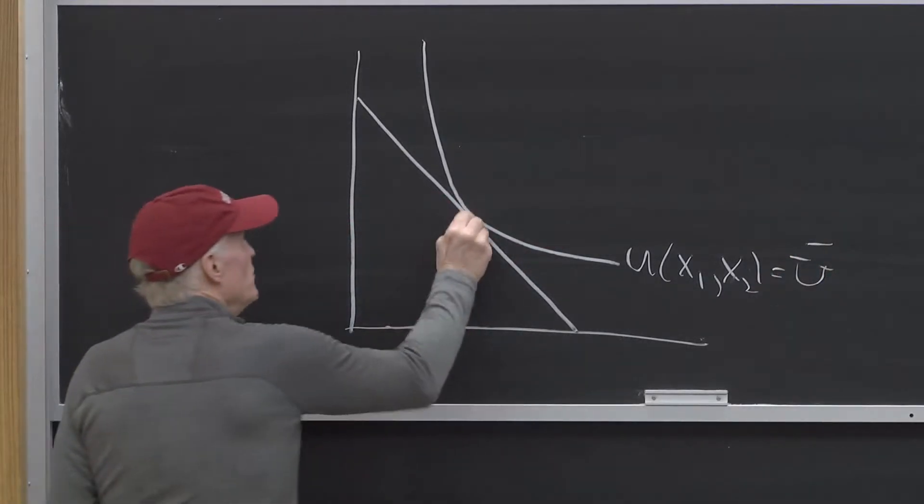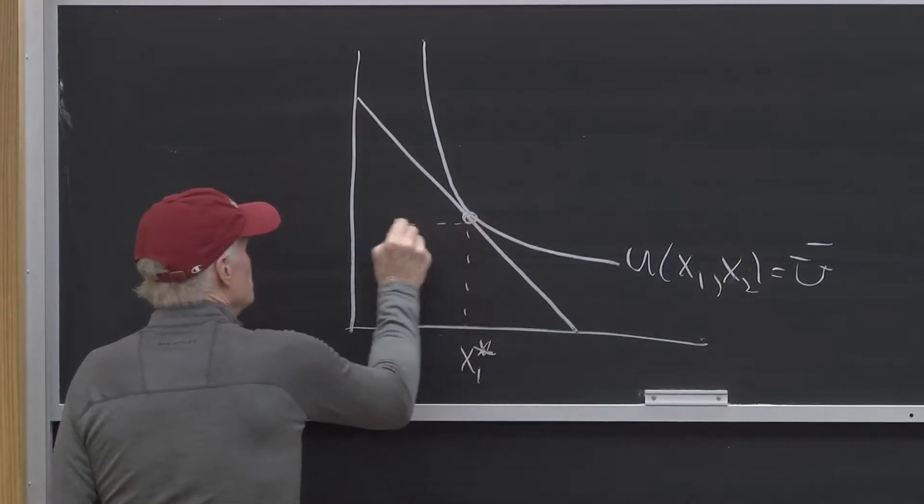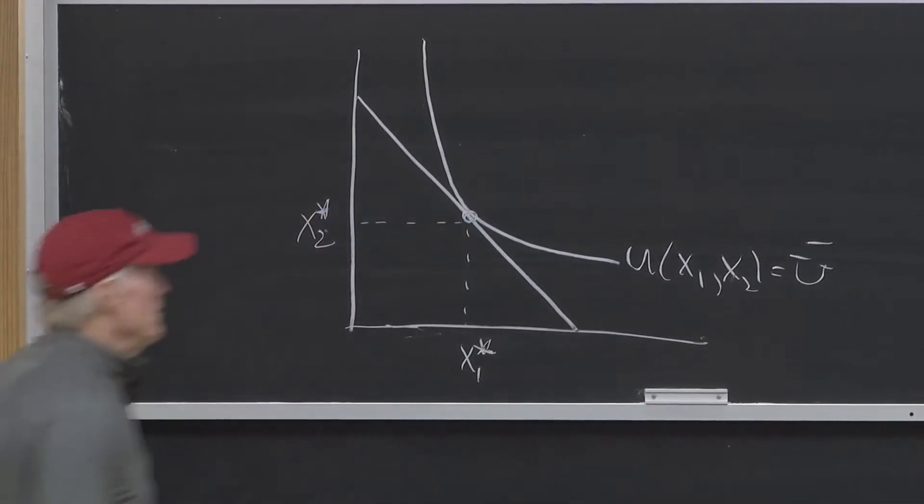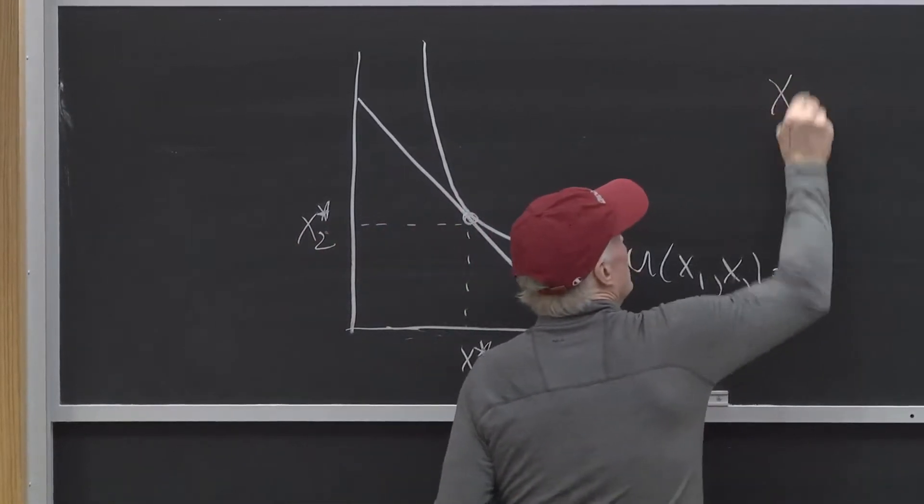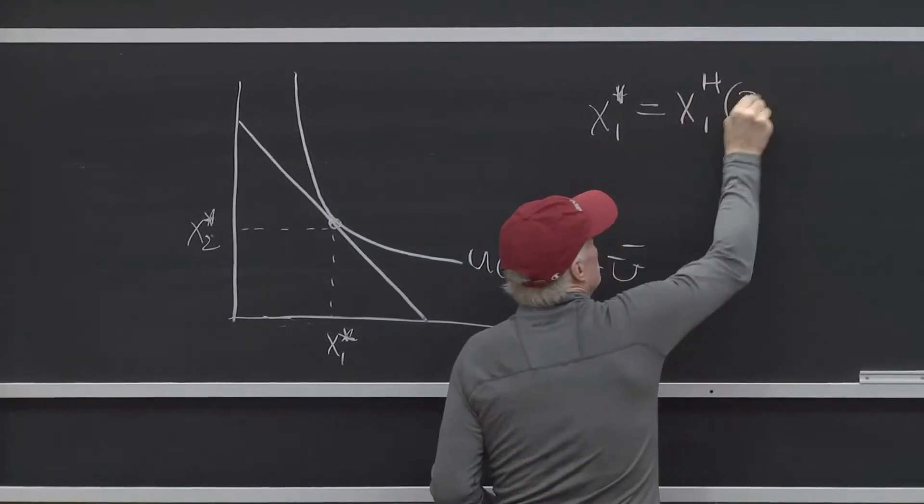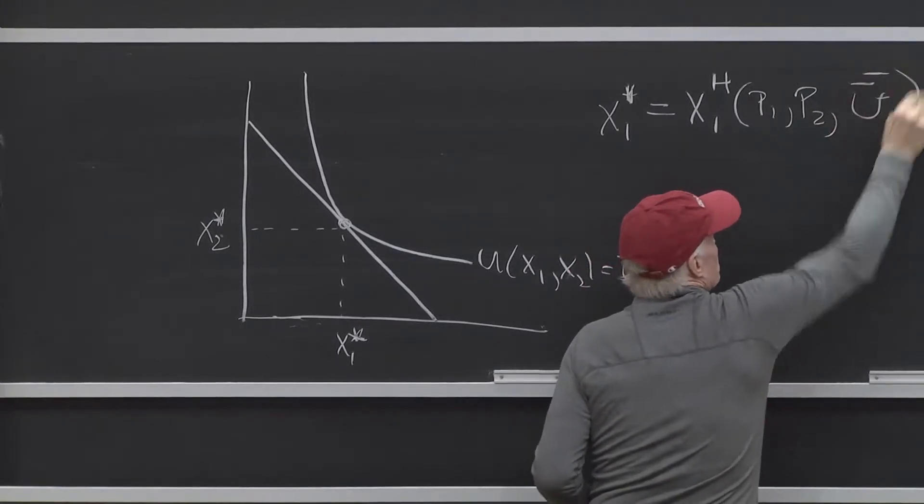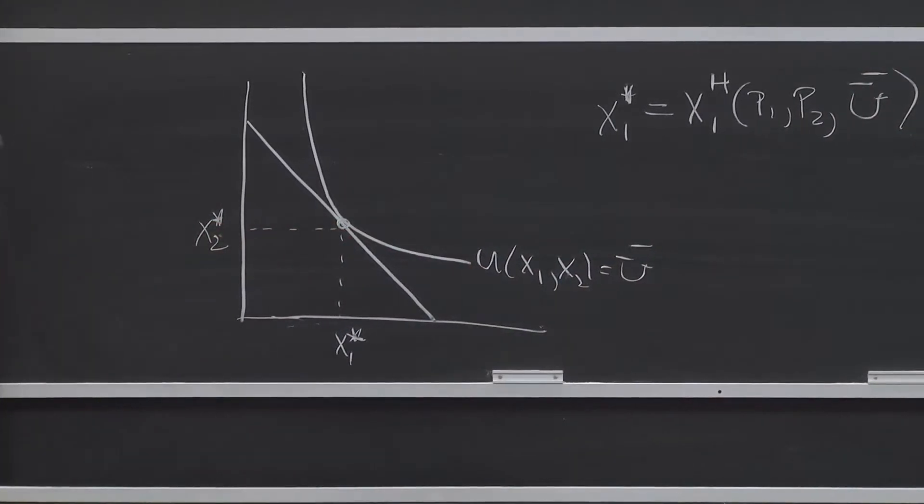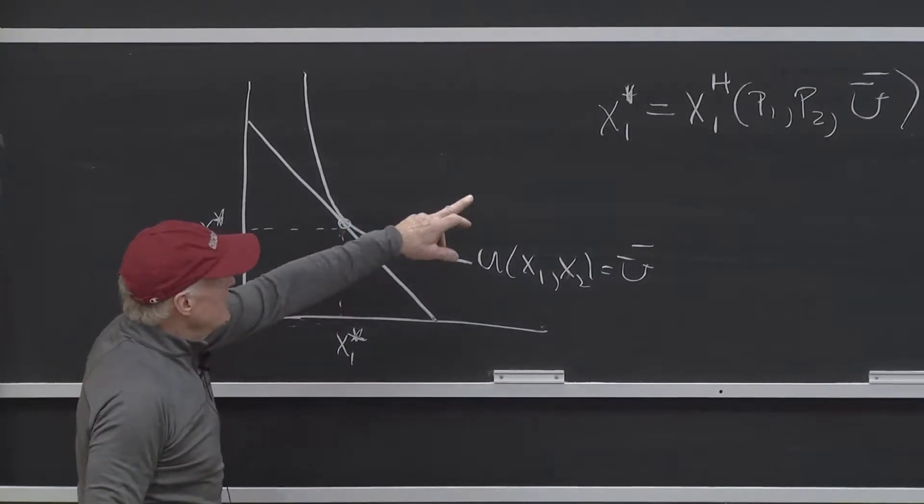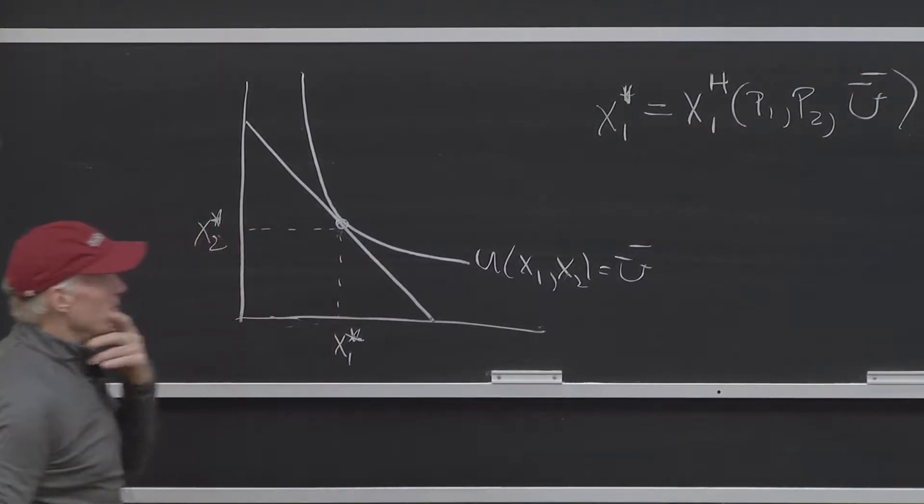And the consumer chooses some point, X1 star, X2 star. And you said, well, so X1 star is equal to X1 Hicksian demand system of P1, P2, and U bar. Everybody would agree with that, right? That's the definition of the Hicksian demand system, that X1 star is the quantity demanded according to the Hicksian demand curve when prices are P1 and P2, and utility level is U bar.